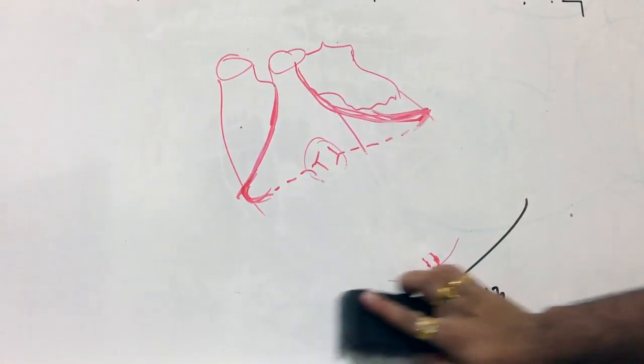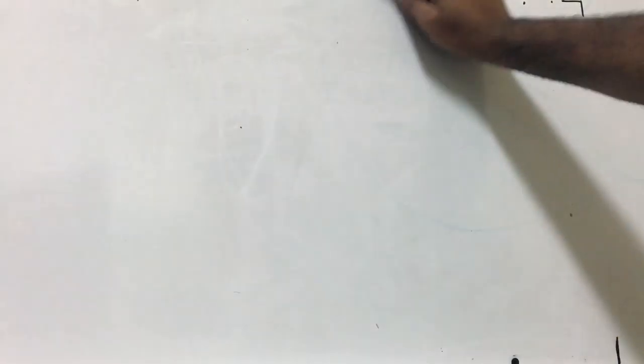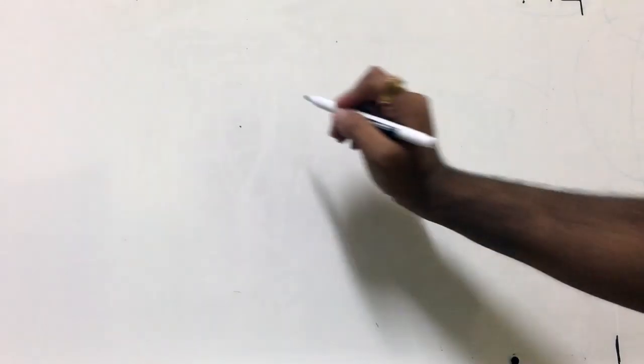One of the principles of the anatomy of the heart is that the most posterior part of the heart is the left atrium. If you have an enlargement of the left atrium for any reason, this can cause something called dysphagia — difficulty swallowing or difficulty eating.